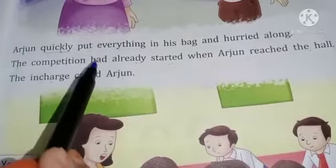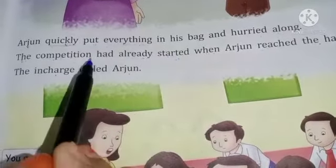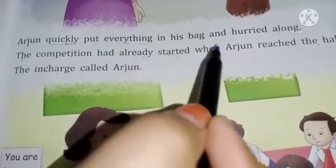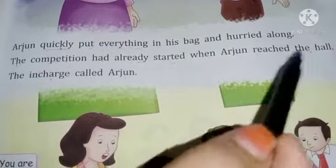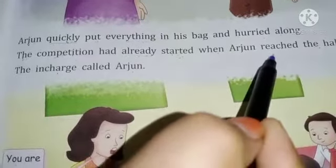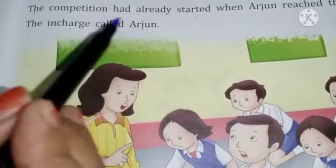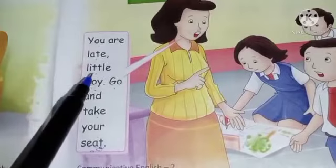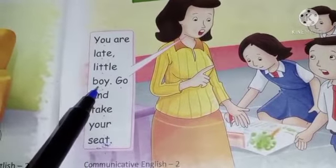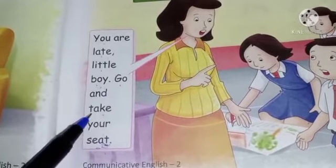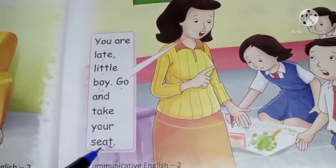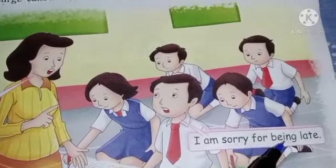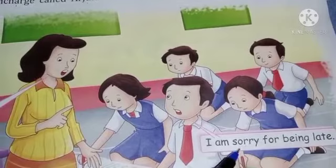The competition had already started. Competition पहले ही शुरू हो गया था. Already means पहले ही. When Arjun reached the hall, जब Arjun hall में पहुंचा, the in-charge called Arjun. In-charge ने Arjun को बुलाया. You are late, little boy. बच्चे, तुम लेट हो गए हो. Go and take your seat. जाओ और अपनी seat पर बैठ जाओ. I am sorry for being late. मैं लेट होने के लिए माफी चाहता हूं.